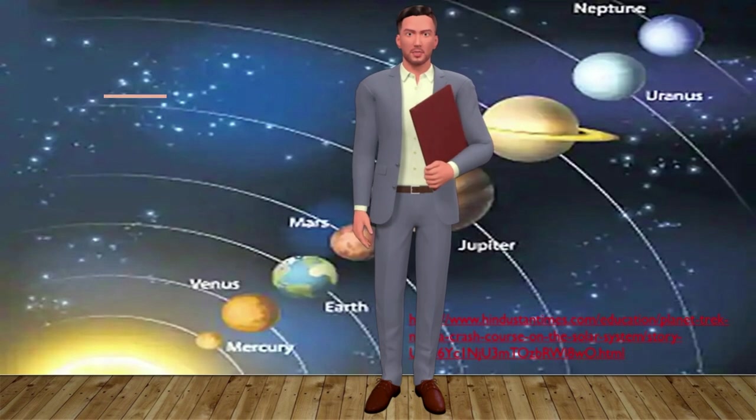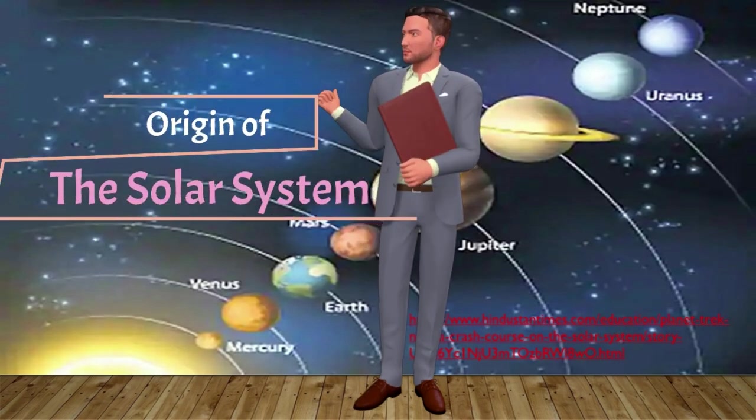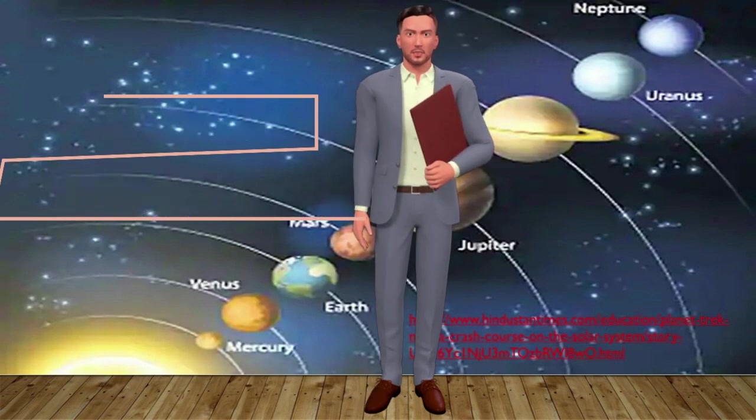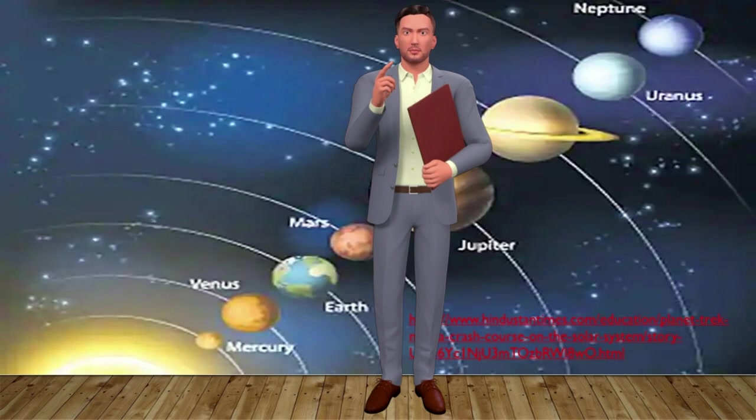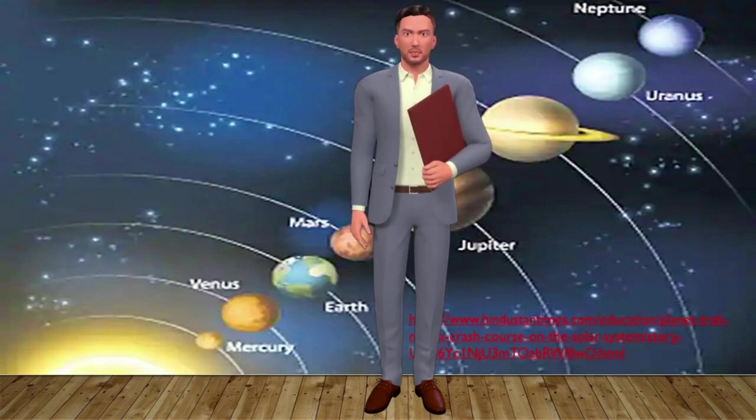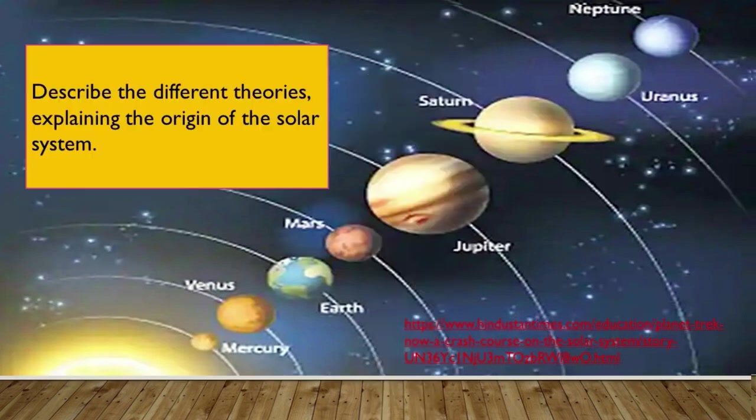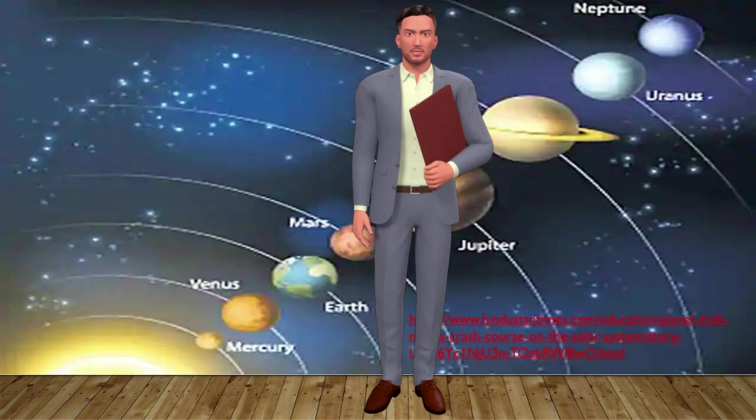Our topic for today is the continuation of the lesson in astronomy entitled the origin of the solar system. The solar system is made up of the Sun being the center and everything that orbits around it, including planets, moons, asteroids, comets, and meteoroids. Our main objective today is to describe the different theories explaining the origin of the solar system. With my colleagues, let us explore the different hypotheses.